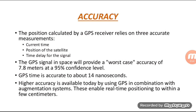Regarding accuracy, the position calculated by a GPS receiver relies on three accurate measurements: current time, the position of the satellites, and the time delay for the signal. The GPS signal in space provides a worst-case accuracy of 7.8 meters at a 95% confidence level. GPS time is accurate to about 40 nanoseconds, and higher accuracy is available today by using GPS information.